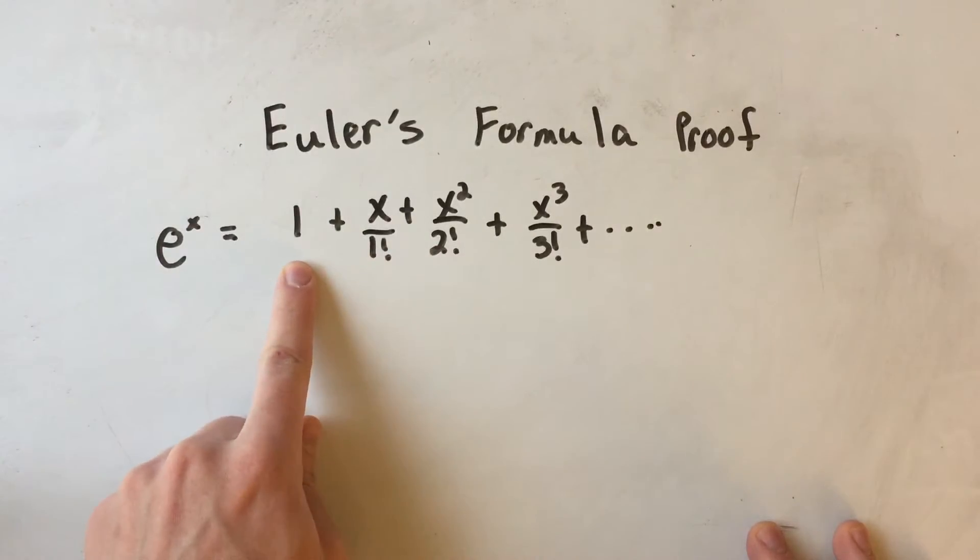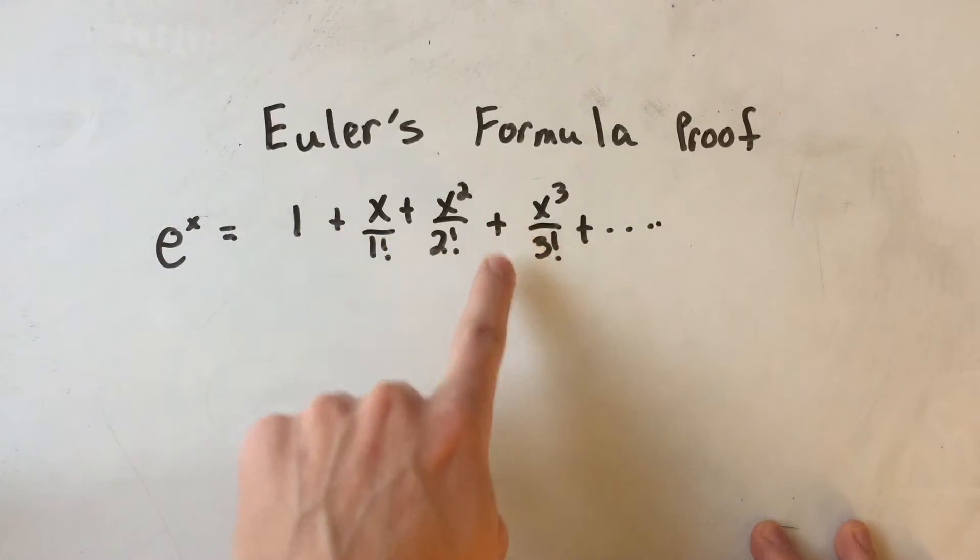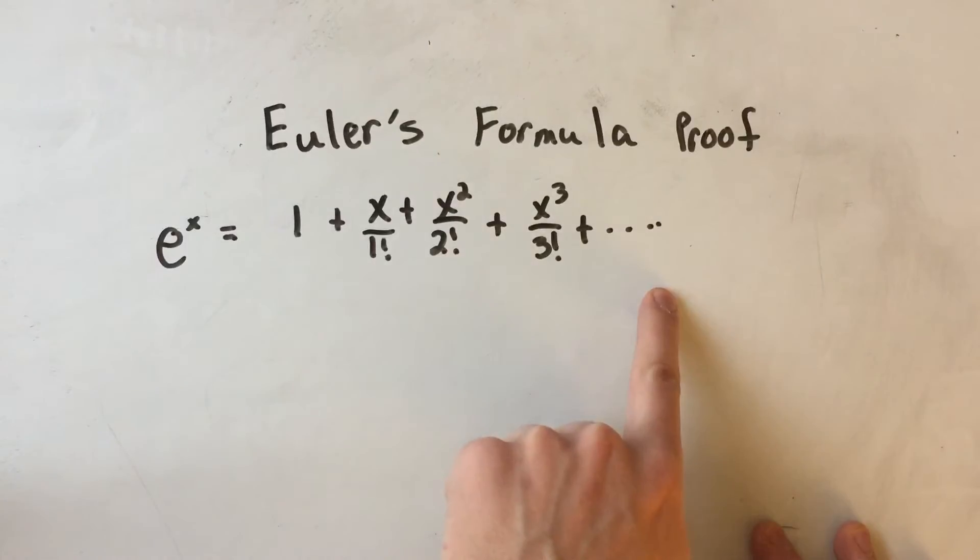The pattern goes 1 over 0 factorial, x to the first over 1 factorial, x squared over 2 factorial, x cubed over 3 factorial, x to the fourth over 4 factorial, and on and on and on.